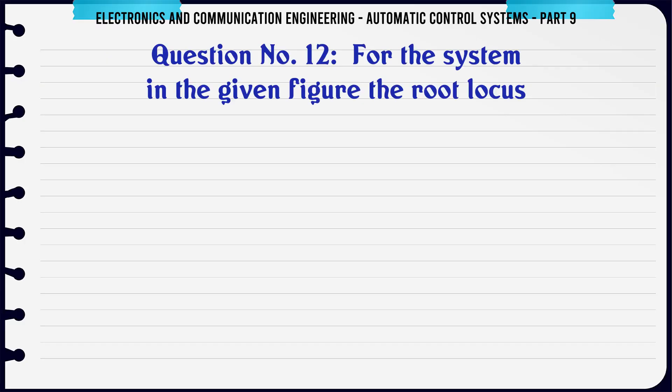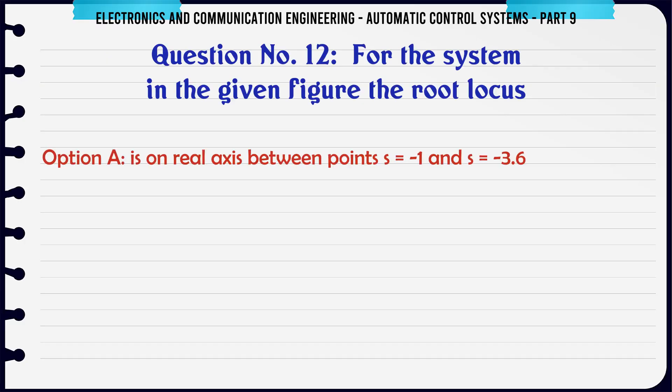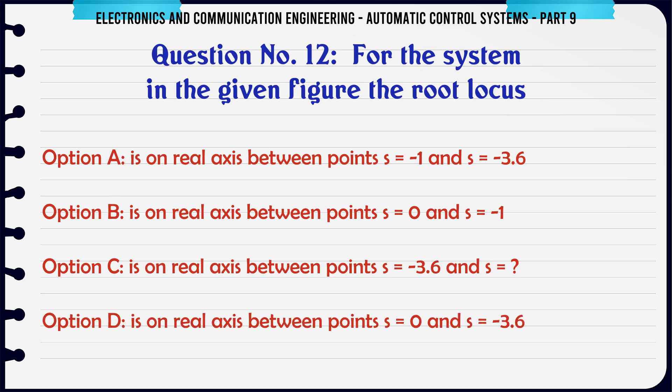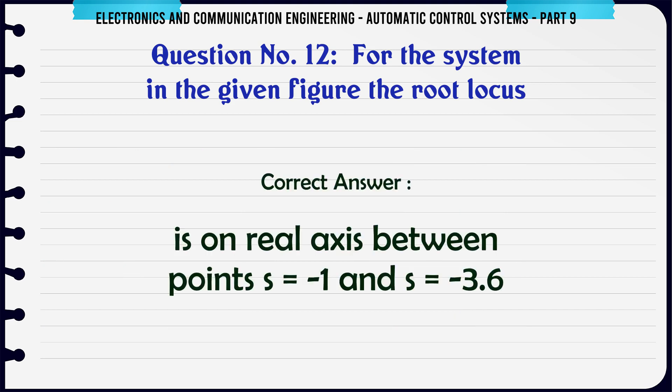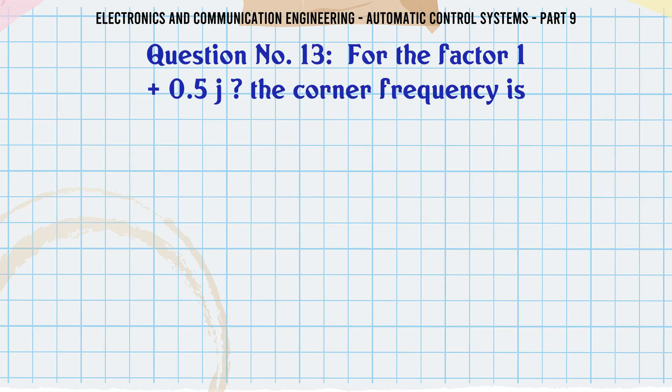For the system in the given figure, the root locus: A. Is on real axis between points S1 and S3.6, B. Is on real axis between points S0 and S1, C. Is on real axis between points S3.6 and beyond, D. Is on real axis between points S0 and S3.6. The correct answer is: Is on real axis between points S1 and S3.6.